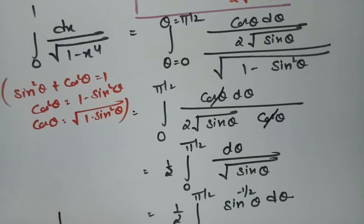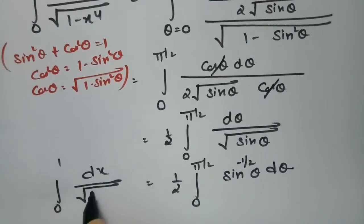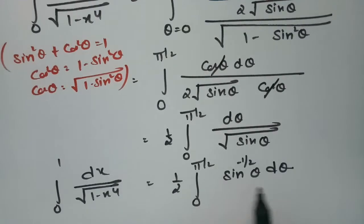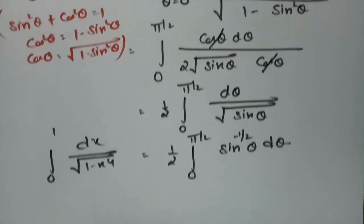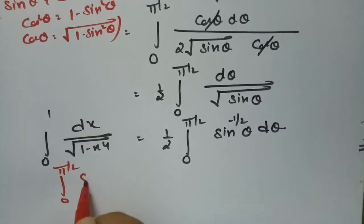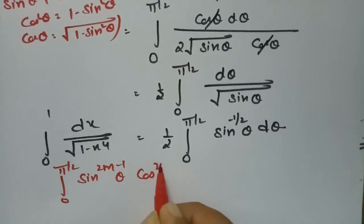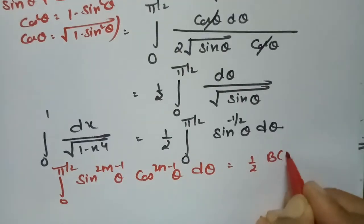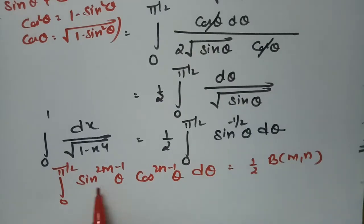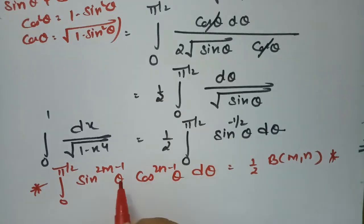Now we use the Beta function formula: ∫₀^(π/2) sin^(2m−1) θ · cos^(2n−1) θ dθ = (1/2) · β(m, n). We are going to apply this formula to our integral.